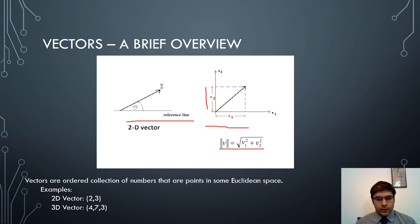So the example of a 2D vector is (2, 3) and the 3D vector is (4, 7, 3).